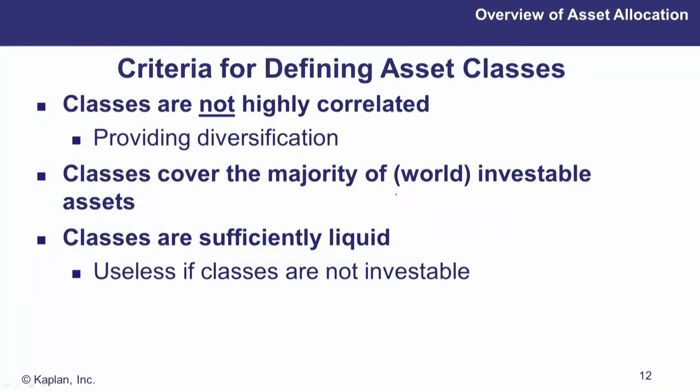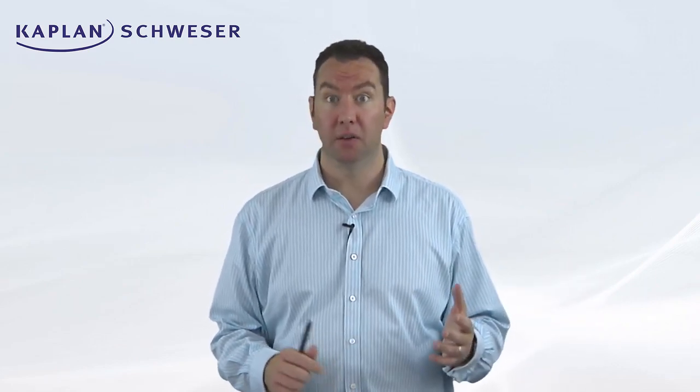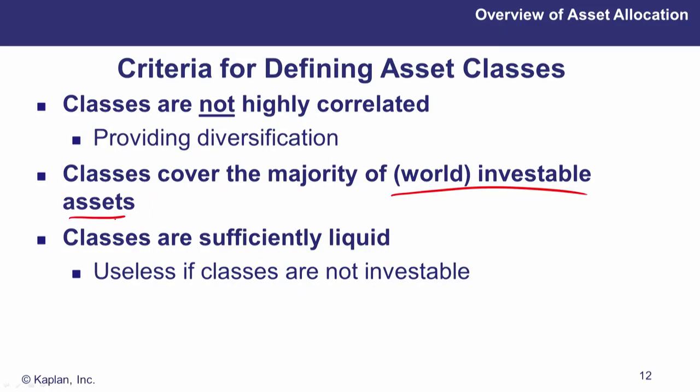Asset classes should cover the majority of the world's investable assets. If our big list of asset classes has missed out a big chunk of assets that can be investable somewhere in the world, then something's missing and we need to define what's missing and put it into another asset class. These asset classes are utterly useless if they're not investable — if you can't actually invest in securities meeting that asset class's risk and return attributes, we're missing something important.